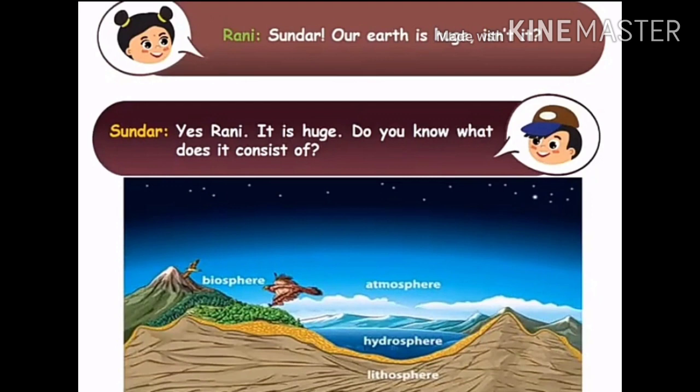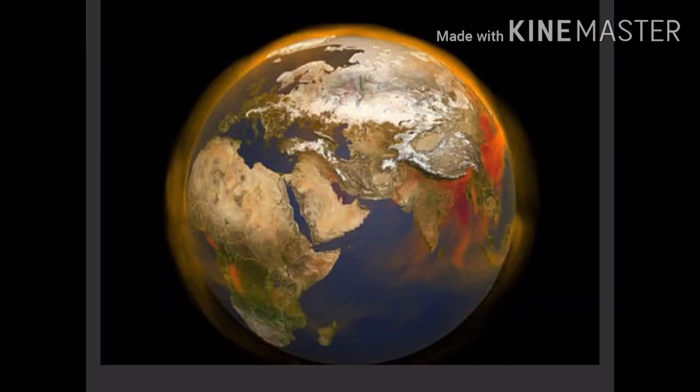Rani said: Sundar, our earth is huge, isn't it? Sundar replied: Yes, Rani, it is huge. Do you know what it consists of? Rani replied: No, can you tell me? Sundar said: Sure, the earth is made up of land, water and air. The earth consists of lithosphere, hydrosphere and atmosphere.